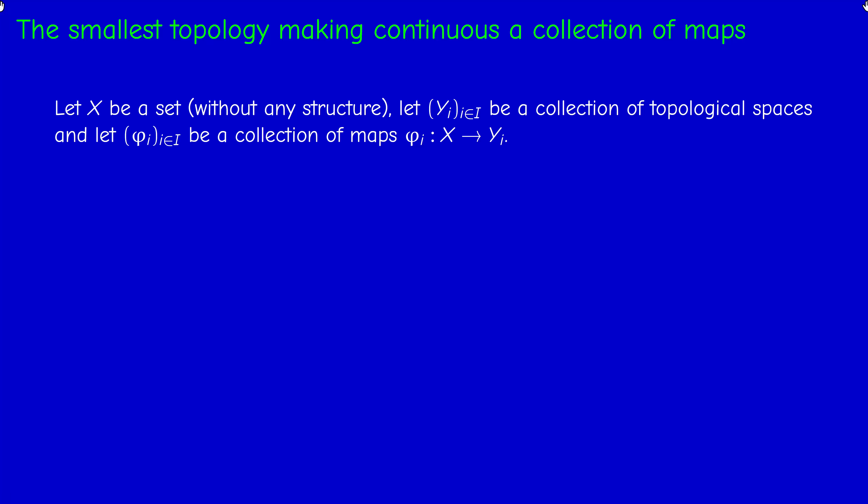Here's the problem. We have a set X without any structure — if it's already a topological space, we disregard its topological structure and consider it just as a set. On the other hand, you have a collection Y sub i of topological spaces, and a collection of maps phi_i from the set X into the topological space Y_i. The main application will be when all these spaces are the same: R.